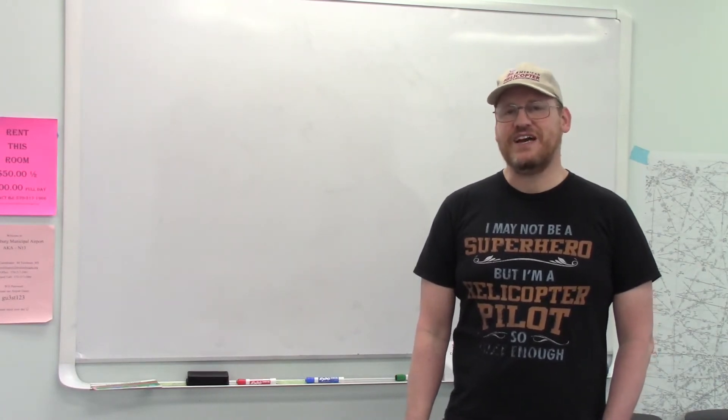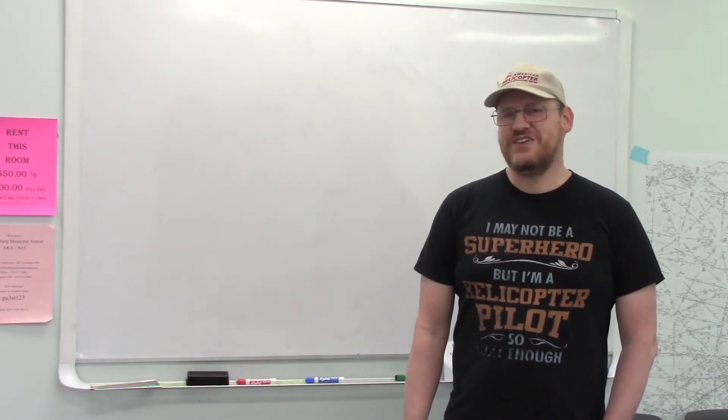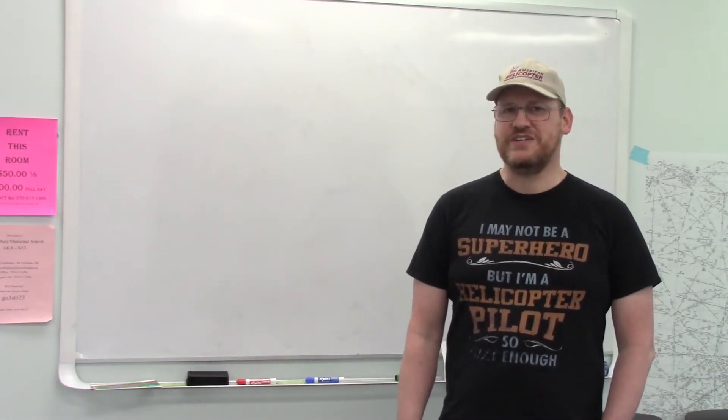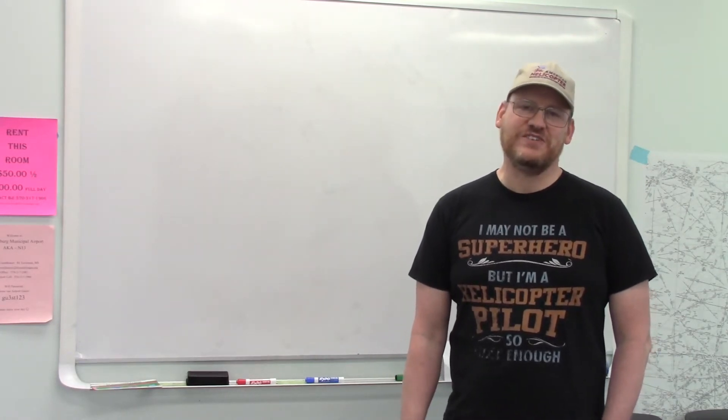We supplement with things like mode C. Mode C sends your altitude. There's mode A, which sends just the code that's on your transponder, which if you're flying VFR or don't have a code, is normally 1200.